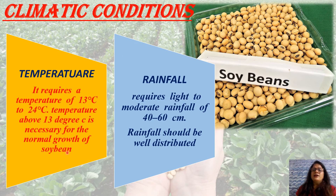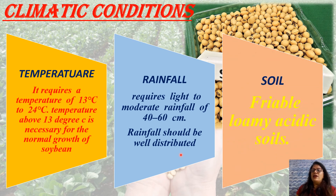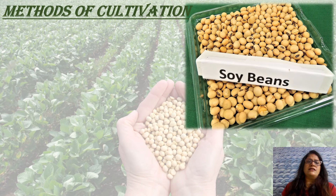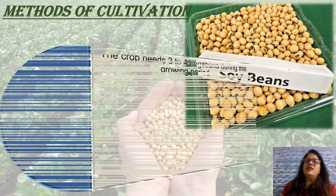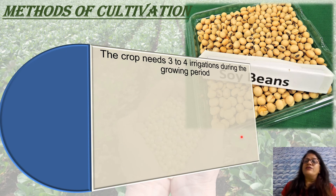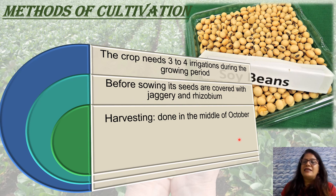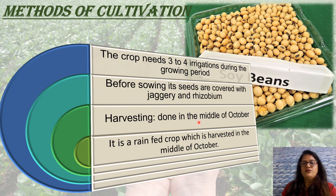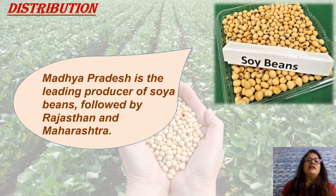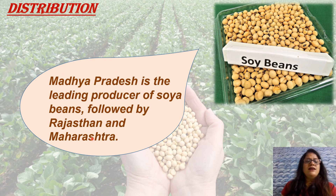Soybean is used as a substitute for animal protein and consumed as soya milk and tofu. Climatic condition: it requires a temperature of 13°C to 24°C, and temperature above 13°C is necessary for normal growth. Rainfall: light to moderate rainfall of 40 to 60 centimeters is required, and rainfall should be well distributed. Soil: variable loamy acidic soil is preferred. Methods of cultivation: soybean is sown 42 centimeters apart through the drilling method. It is a rain-fed crop and irrigation is not required. Harvesting is carried out in mid-October by threshing machine. Distribution: soybean is produced in Madhya Pradesh, Rajasthan, and Maharashtra.